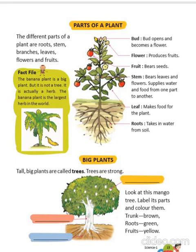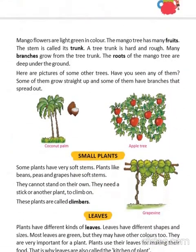These are roots and these are fruits. In this activity you have to color different parts with different colors: paint the trunk brown, paint the roots green, and paint the flowers yellow. The mango tree has many fruits and its stem is known as the trunk.